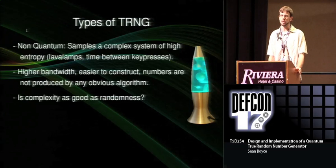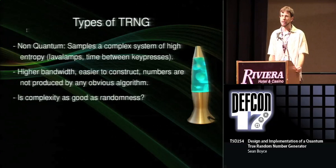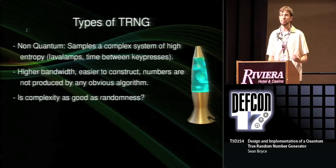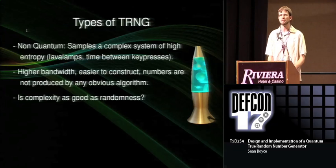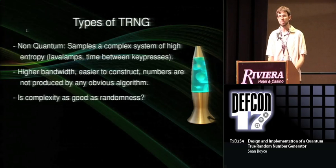Among true random number generators, there are two sorts. Non-quantum TRNGs sample a complex and chaotic system — I use chaos and entropy interchangeably — and use that measured entropy to generate random numbers. These are not that hard to design if you think very carefully. For instance, you can use minor differences in user input timing, or sample air pressure or temperature over very small time scales. But fundamentally, you're sampling a system that has a lot of inputs, and you have to ask yourself whether the complexity of the output is as good as random output, because it's very difficult to prove what all the inputs are, let alone whether some are defined by an algorithm or biased in some way.